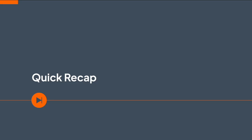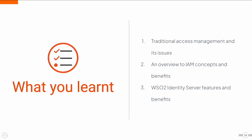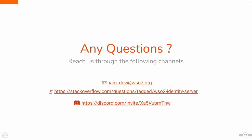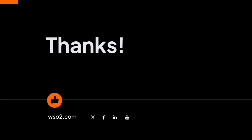Let's have a quick recap of what we learned from this training. First, we got to know about traditional access management and its issues. Then, we got an overview of IAM concepts and benefits. Finally, we got introduced to WSO2 Identity Server's features and benefits. If you have any questions or need further clarification, feel free to get in touch with us. Our email is iam-dev@wso2.org. In Stack Overflow, you can tag your queries with wso2-identity-server, or you can join our Discord server using the invite. Thanks for watching this video. Hope to meet you in another exciting training video.